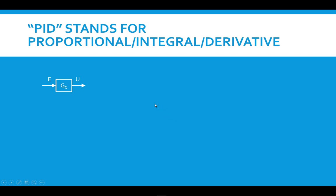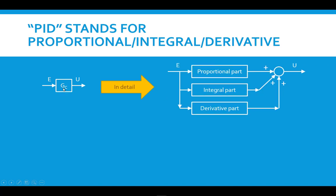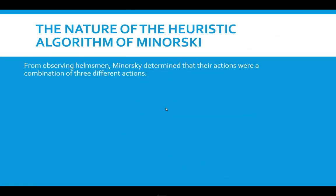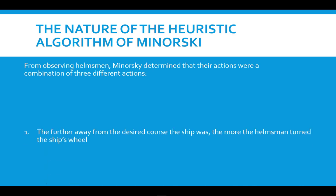PID stands for proportional, integral, derivative. We have the controller represented as a single block, but that block can have a more complicated structure inside of it, so we're going to look inside and see what's going on. The PID controller is a three-part controller — it has three actions. All three parts take the error as an input but operate on it differently, producing different actions that are summed together to form the command signal to the actuator.